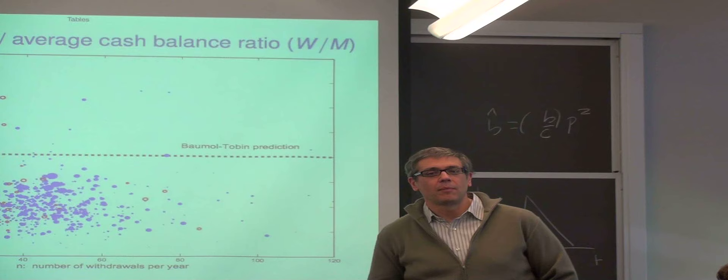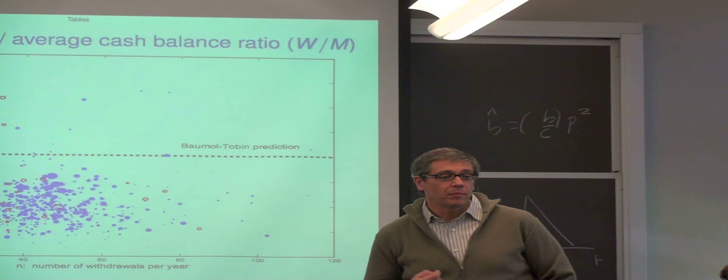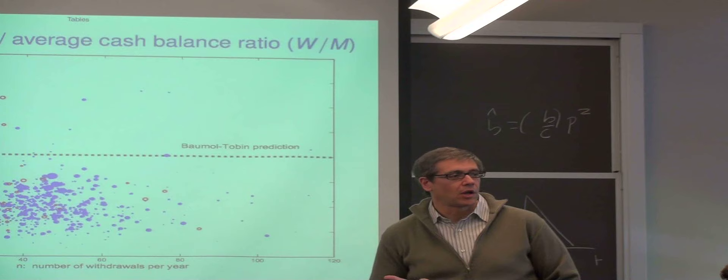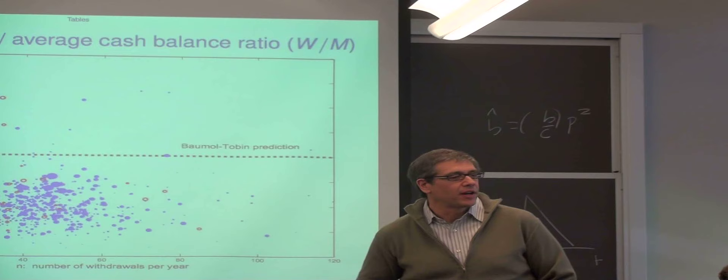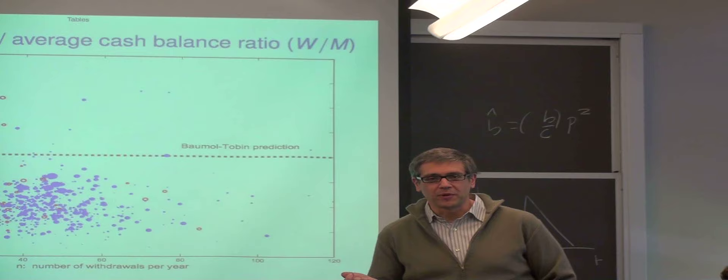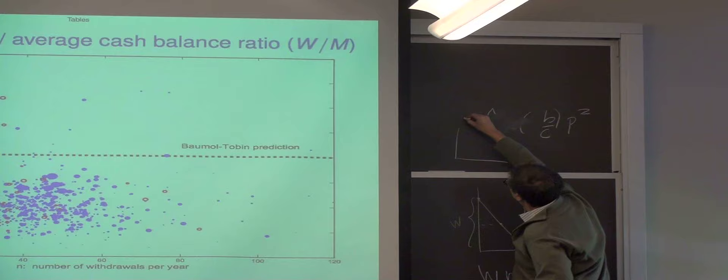Then we redo the estimates of the cost of inflation of Lucas. And we get numbers that are half of his numbers. And if you think about his numbers, they are all the function of the interest elasticity. We have an interest elasticity, not quite one-half as he has. He just imposed that. We get something that is different from one-half, but our estimates are half of his. So the question is, what's going on? What's going on is the following. Remember the very simple model?